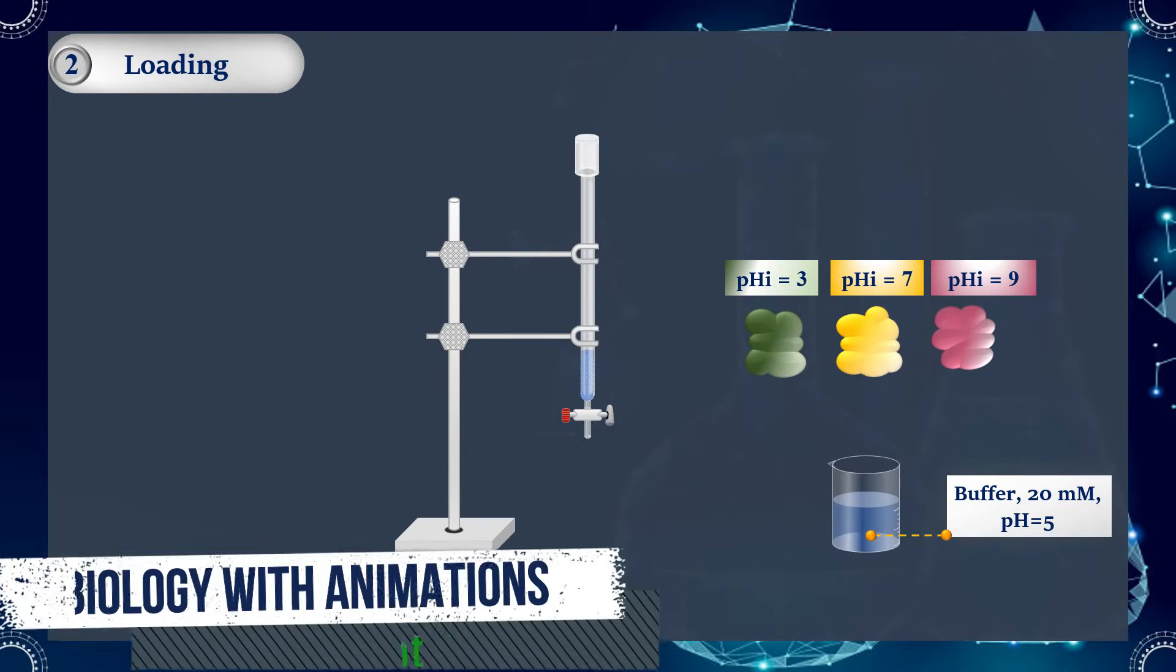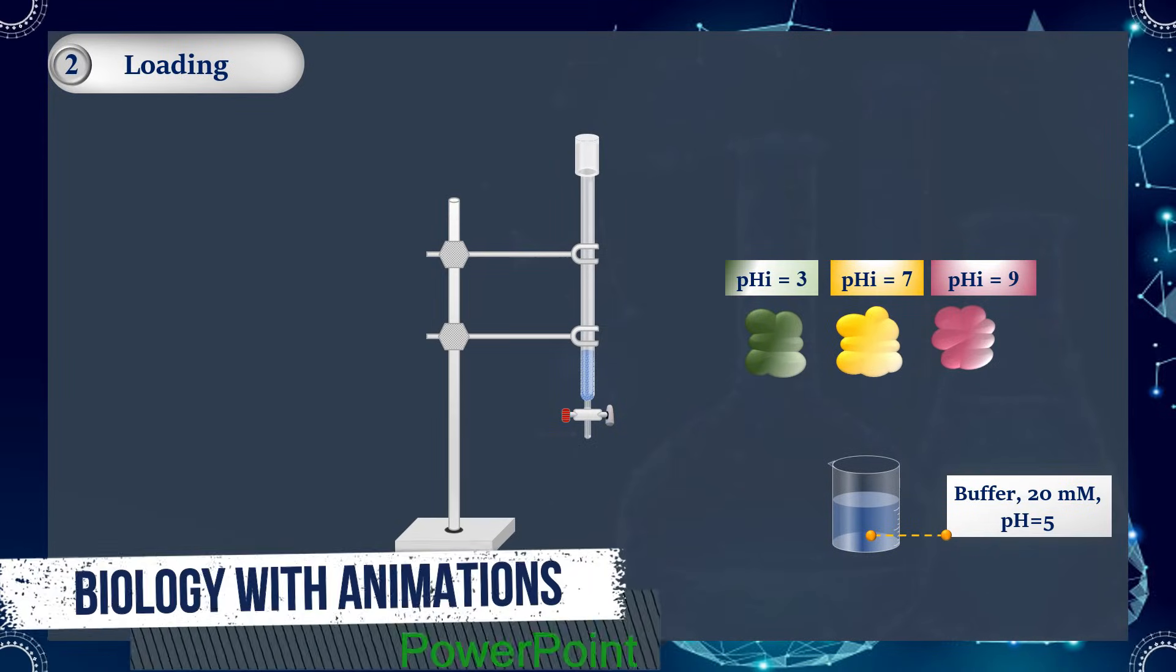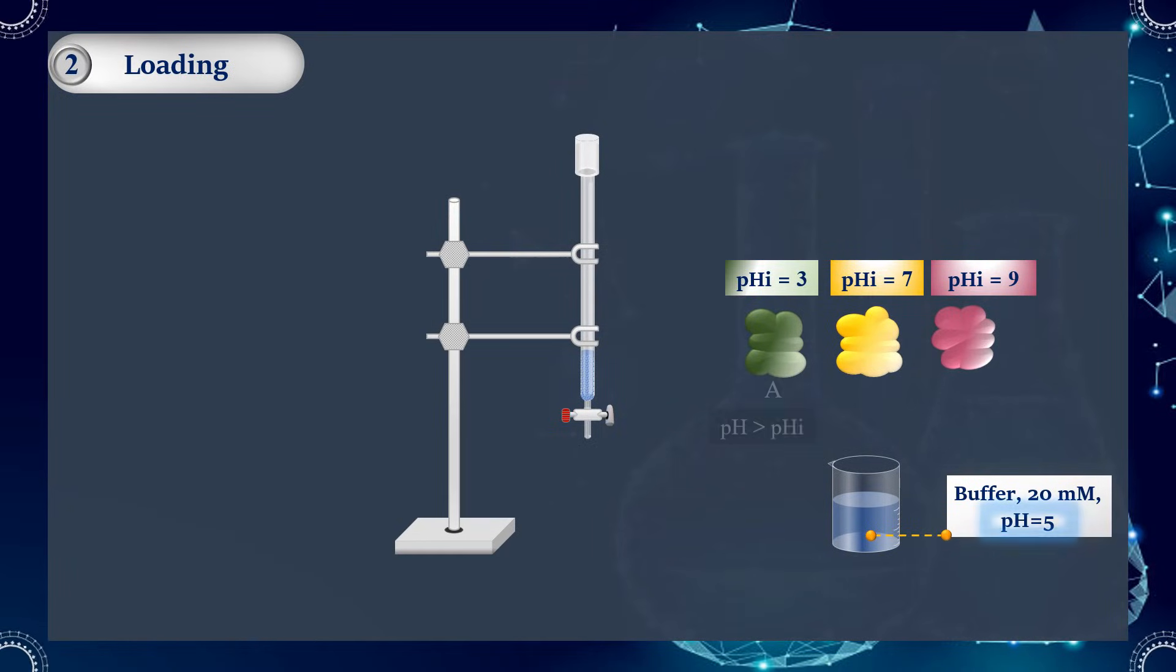In this example, the pH of the buffer is equal to 5. Consequently, protein A has a net negative charge, and both protein B and C carry a net positive charge. In addition, protein C is more positively charged, since its pHi is higher than the pHi of protein B.